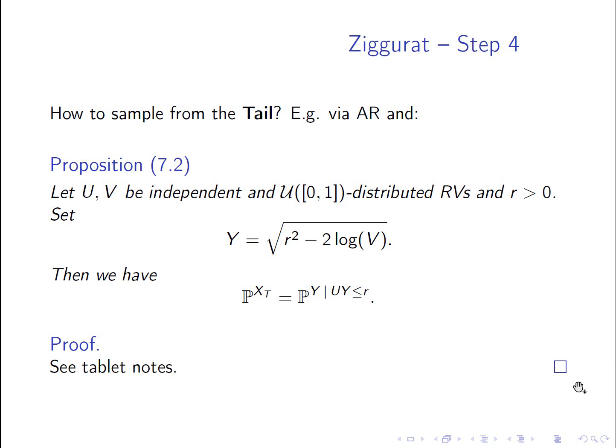So now step number four of the Ziggurat method. So far what we did? We symmetrized everything by considering the absolute value of z, then we split the absolute value of z in the base part and the main part, and then we built the Ziggurat.